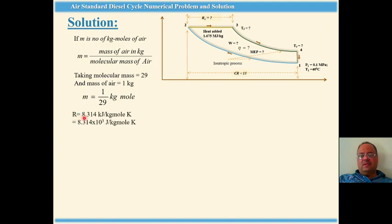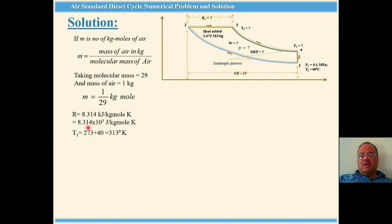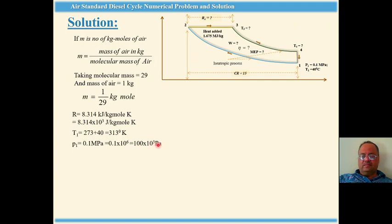R is given as 8.314 kilojoule per kg-mole, which we convert to joule per kg-mole by multiplying by 10 to the power 3. T1 is given as 40 degrees centigrade, converted to kelvin by adding 273, giving 313 kelvin. Pressure P1 is 0.1 megapascal, converted to 100 kilopascal.